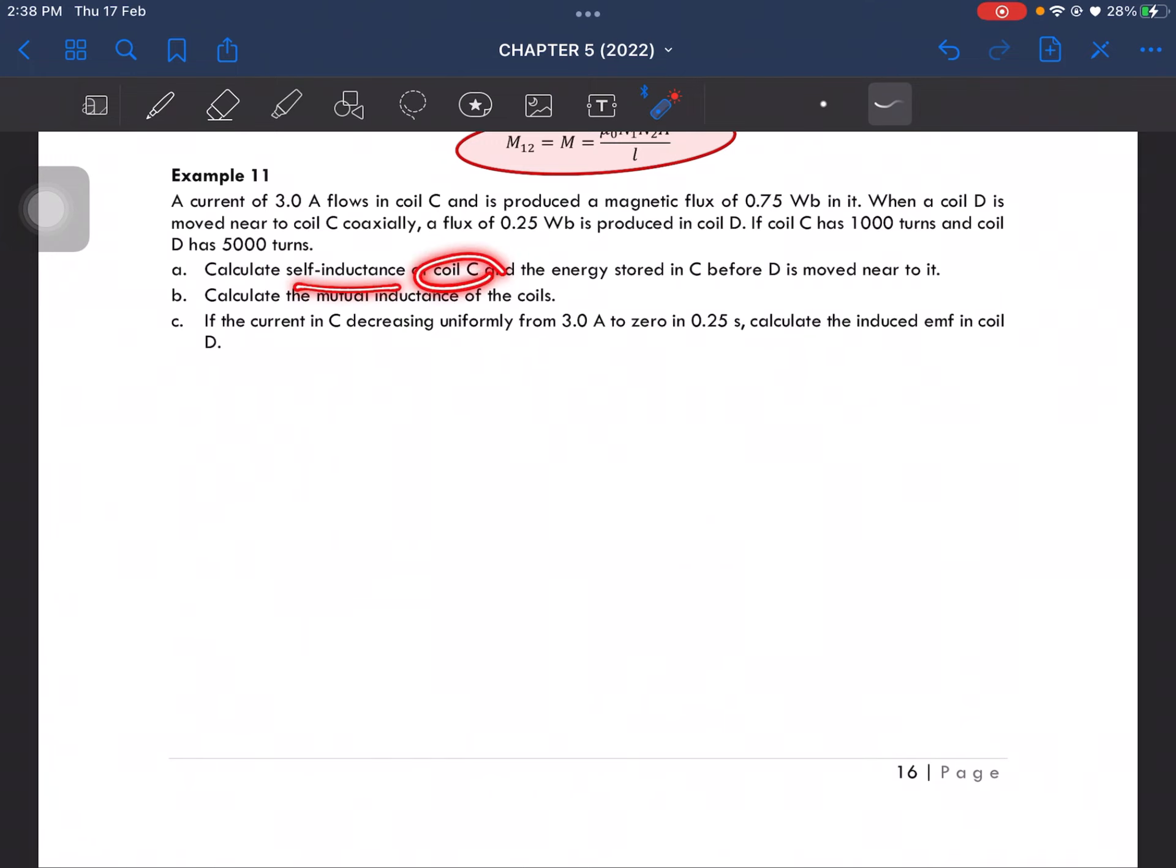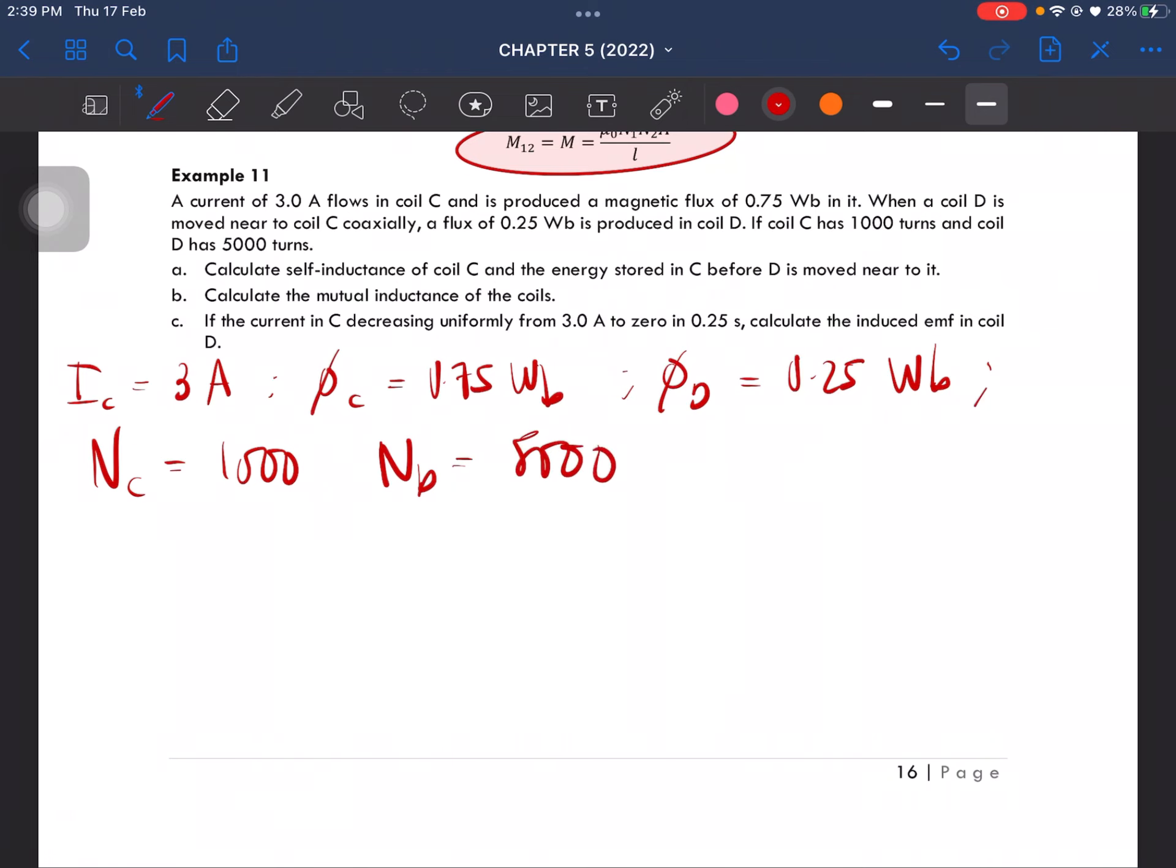calculate the self-inductance of coil C and the energy stored in C before D is moved near to it. So given is the current of coil C which is 3 ampere, the magnetic flux of coil C which is 0.75 Weber, and the magnetic flux of coil D is 0.25 Weber. Coil C has 1,000 turns and coil D has 5,000 turns.